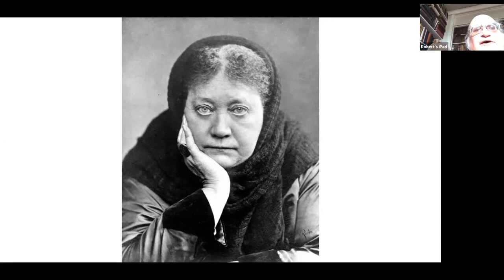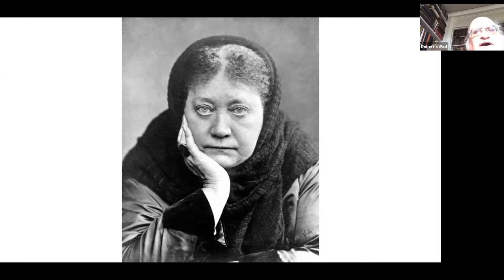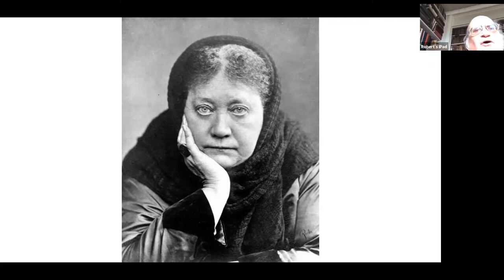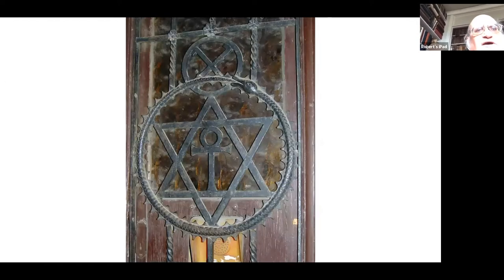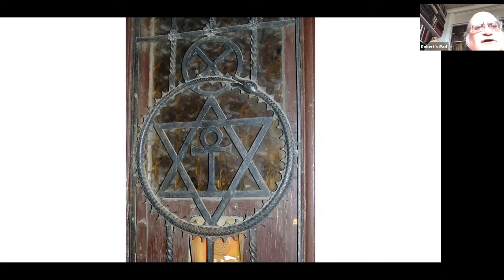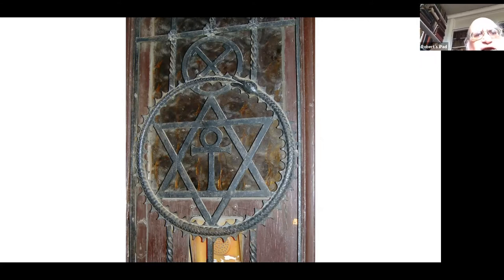Blavatsky had her own theories about creation. She was a dualist who believed the whole universe was based around two principles — male and female — and therefore came into existence in the same way as human reproduction. In her book she describes all the main mystic symbols that express this. Looking at the emblem she developed for the lodge doors and the Theosophical Society building in Gloucester Road, you can see what the emblems of Theosophy are about. At the centre you have what appears to be a Christian cross, but it is actually an Egyptian Ankh, which was believed to contain the secret wisdom of the Egyptians.